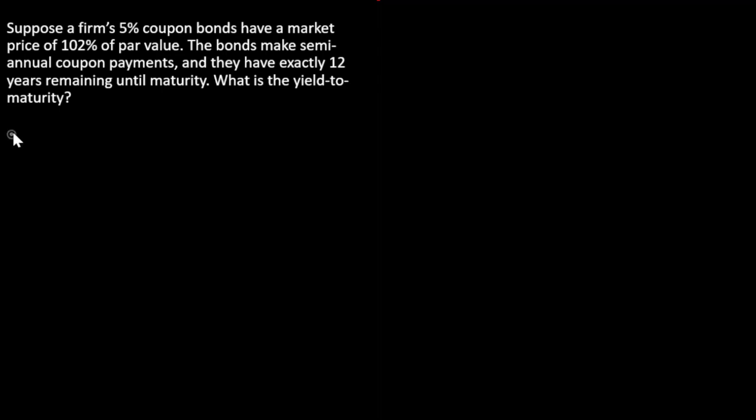First thing we're going to do is, since everything here is expressed as a percentage of par value, we're going to think of par value as 100. Second, we need to construct a timeline, and third I want to identify all of our various inputs.